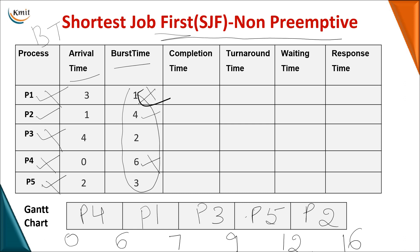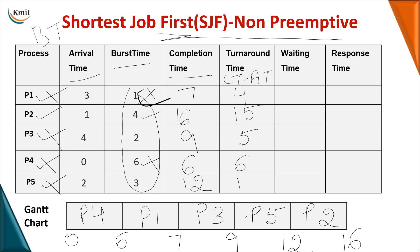Now we fill in the completion times from the Gantt chart: P1 completed at seven, P2 at sixteen, P3 at nine, P4 at six, and P5 at twelve. Turnaround time equals completion time minus arrival time: P1 = 7 minus 3 = 4; P2 = 16 minus 1 = 15; P3 = 9 minus 4 = 5; P4 = 6 minus 0 = 6; P5 = 12 minus 2 = 10.